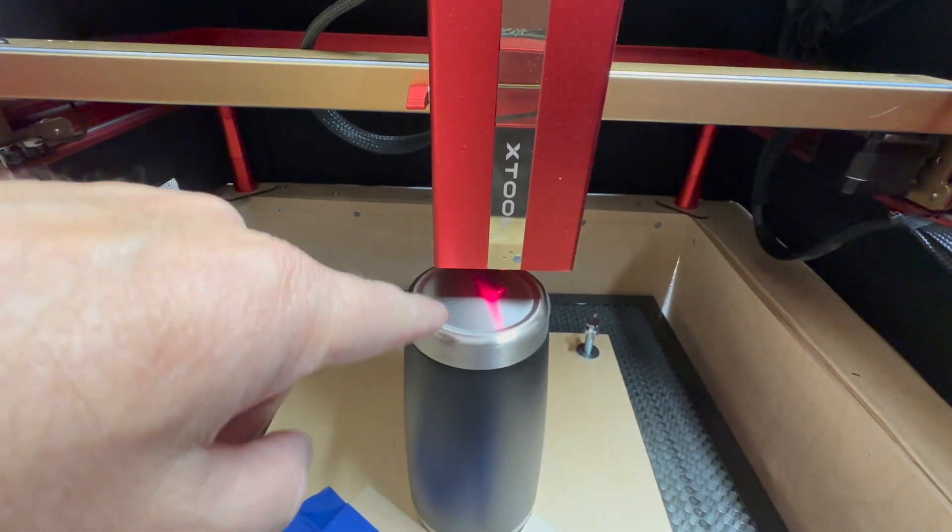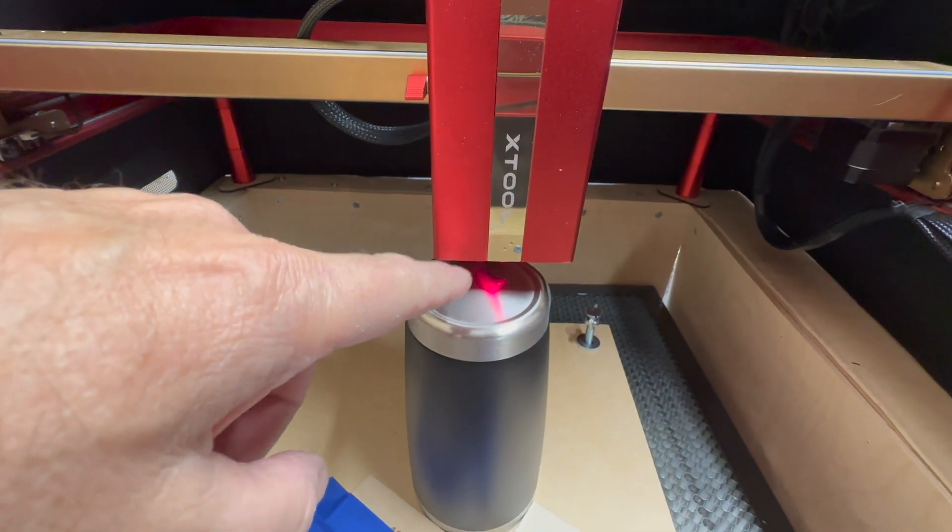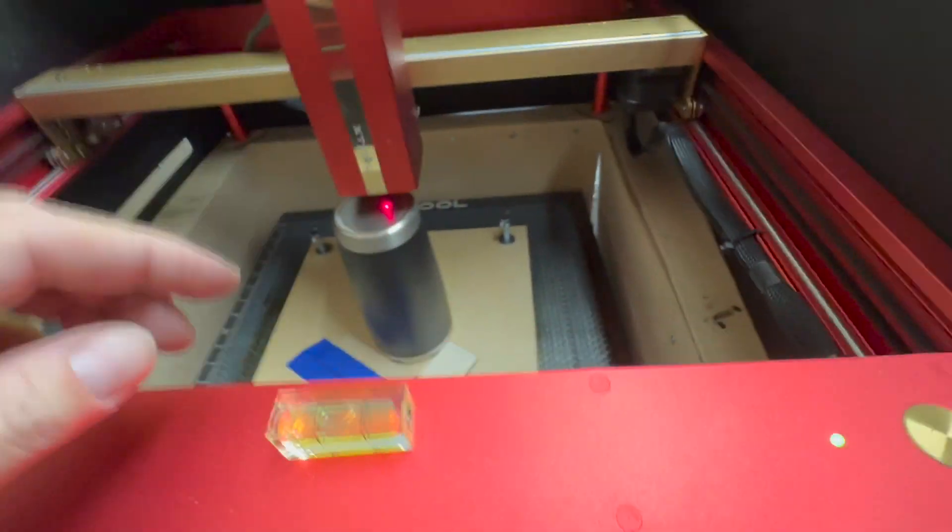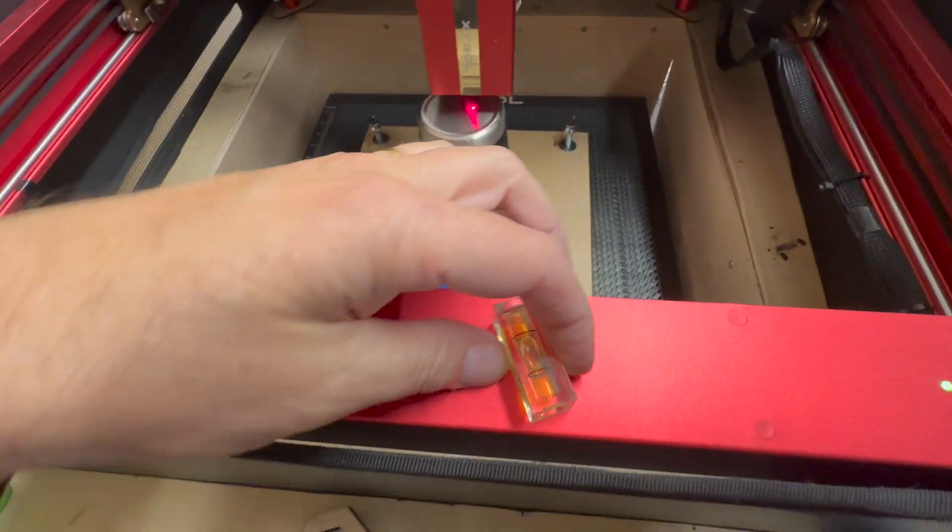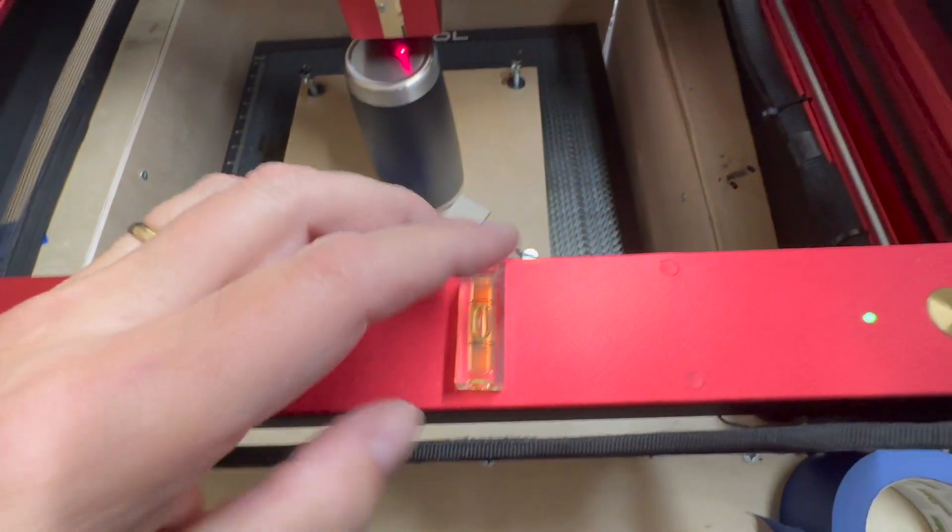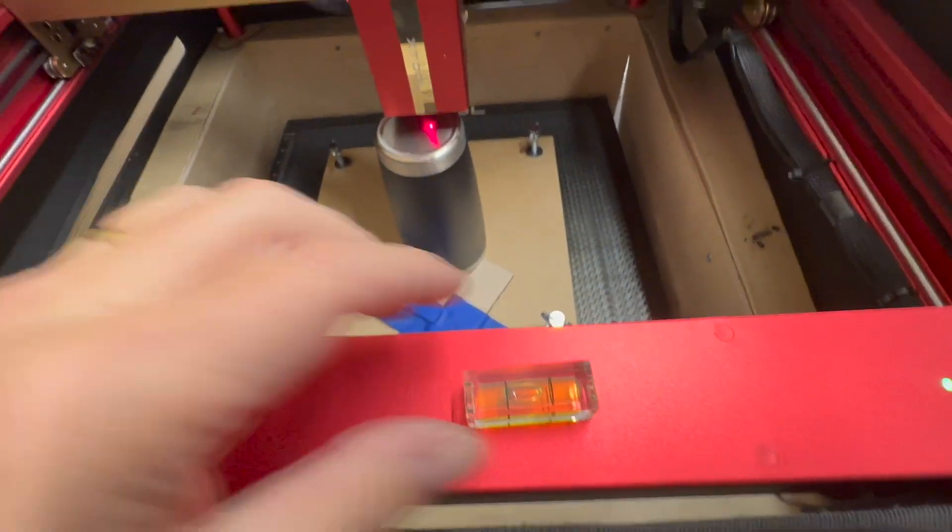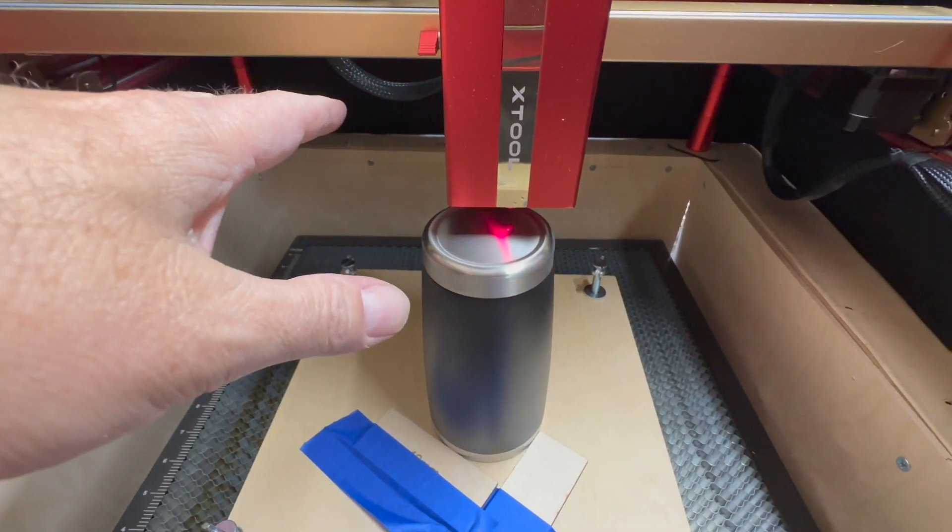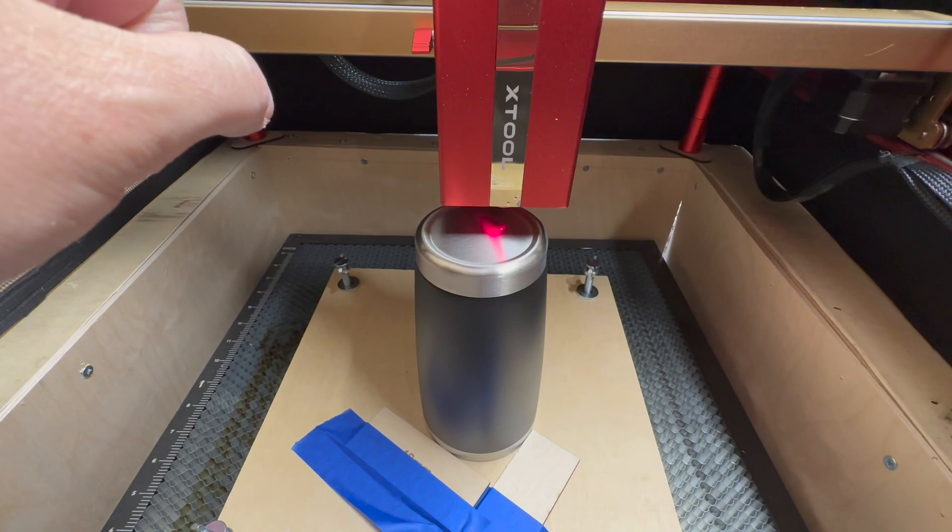I think I read that the engraving module is one millimeter of play. So if the mugs were not level, and I've assured that the laser is relatively level. It's not showing too level right now, but I've kind of played around with that. If the mugs were not level, then I got a bad burn on that.